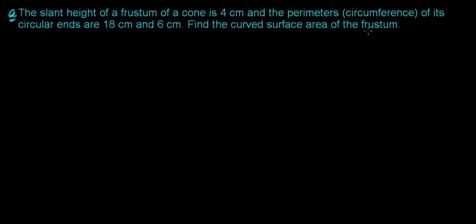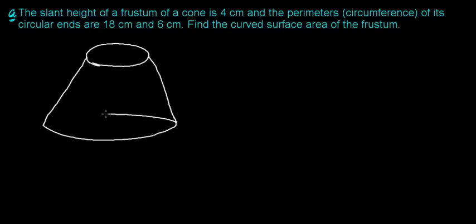Then find the curved surface area of the frustum. So the question is saying something like this: we have a frustum. Let's say this is the upper circular part of the frustum and the lower part. Let me make the lower base, which is circular again. This is the lower and this is the upper one.